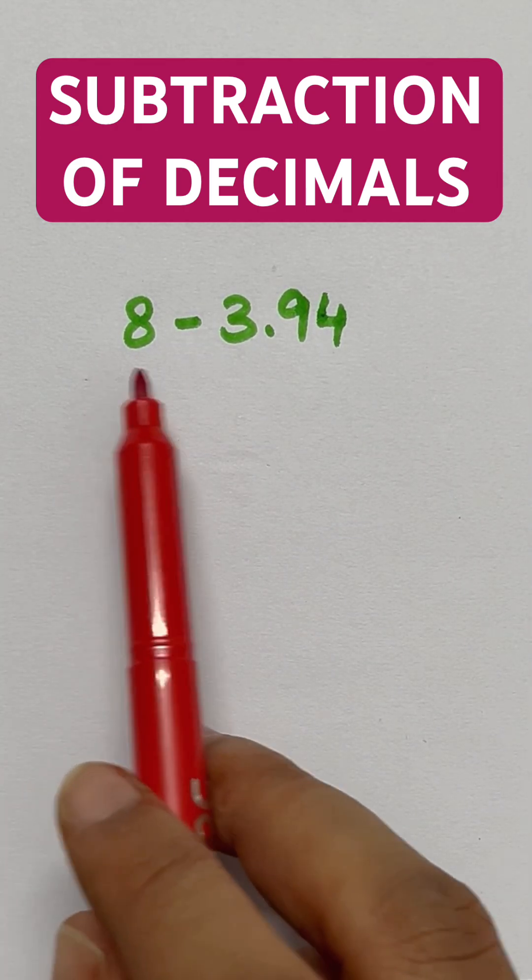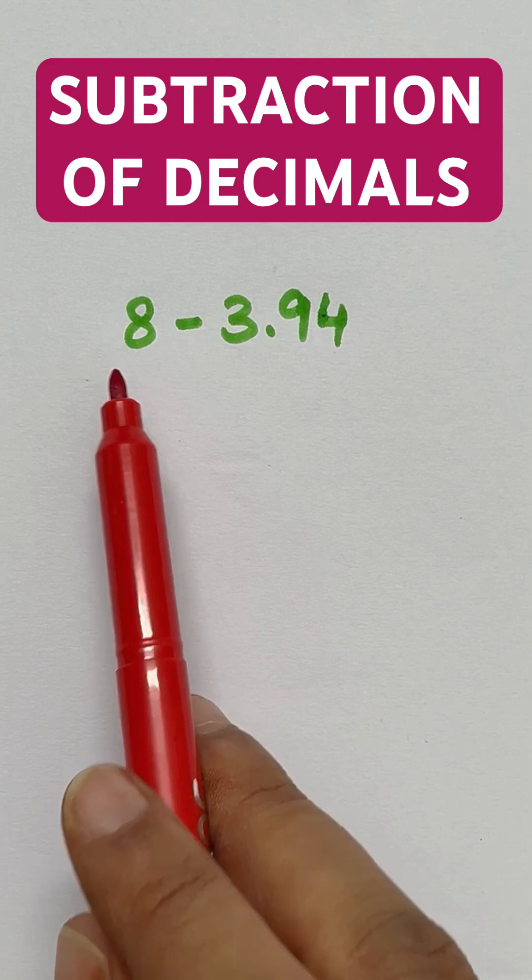So look at the question, the question is 8 minus 3.94. So 8, this number is a whole number.